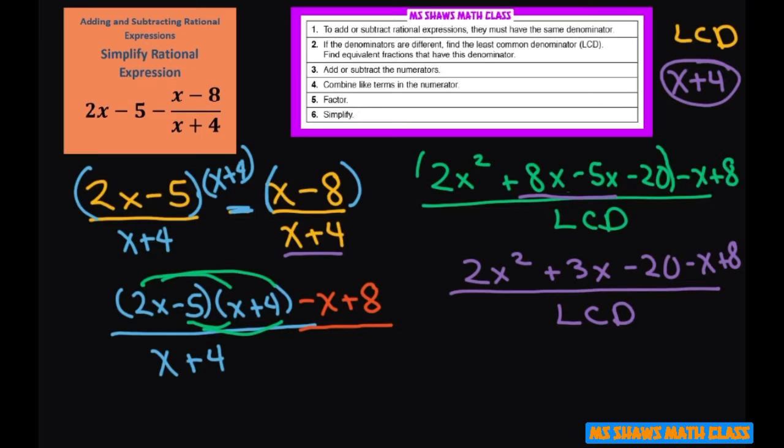All right, now further, let's see what we can do with this. We have 2x squared, 3x minus x is 2x, and then we have negative 20 plus 8 is negative 12.